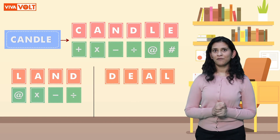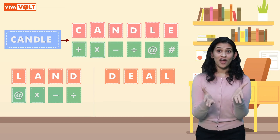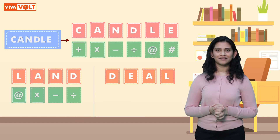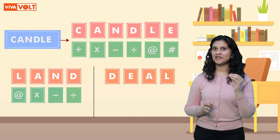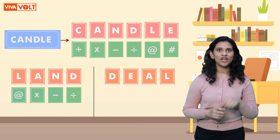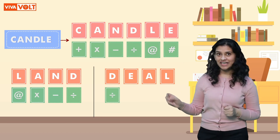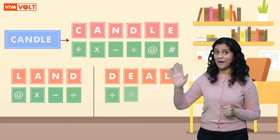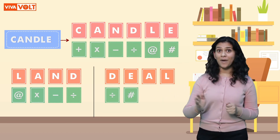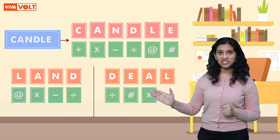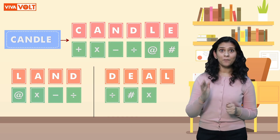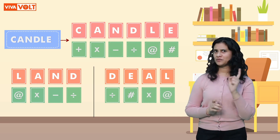Similarly, the next question is for you to solve: DEAL. I've given you about half a minute — try and solve it. I'm sure you must have been able to solve it easily. The answer is: D is division, E is denoted by hash, A by the multiplication sign, and L by at-the-rate. I'm sure you must have done it correctly.